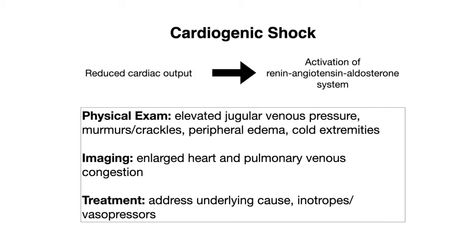Let's now discuss cardiogenic shock, which is when the heart is unable to pump effectively, leading to a global hypoperfusion state. As a result of this reduced cardiac output, we again see activation of the renin-angiotensin-aldosterone system to compensate. On physical exam, we'll find an elevated jugular venous pressure — because when cardiac output decreases, blood backs up into the venous circulation. Patients will also present with murmurs or crackles, peripheral edema, and cold extremities.